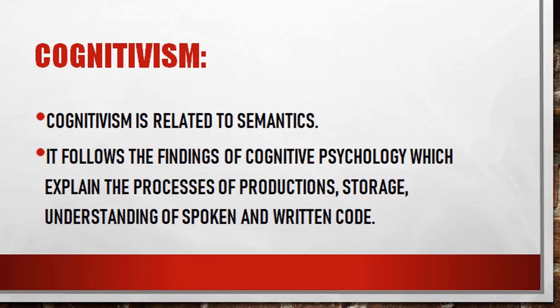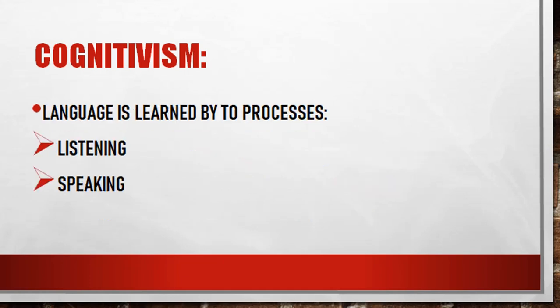Cognitivism has three sub-fields: cognitive semantics, cognitive approach to grammar, and cognitive phonology. Cognitive semantics relates to how we process meaning in our minds. Cognitive approach to grammar concerns how our grammar approach works in the mind. Cognitive phonology concerns how we articulate, process, and produce words. These are the sub-fields of cognitivism.